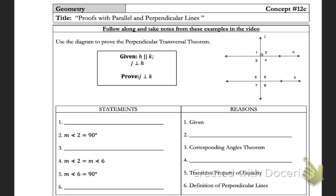For statement number one, the blank reason is 'given,' so we put our givens in there. Whenever we have a given we want to mark our picture — it was already marked but we'll mark it again. We'll have both givens written in there. For statement two, the measure of angle two is 90 degrees; there's a perpendicular mark in the picture, so we know it's 90 degrees by the definition of perpendicular.